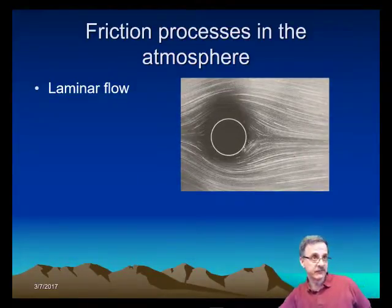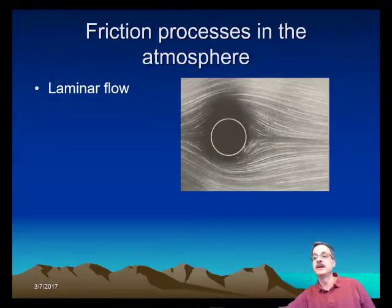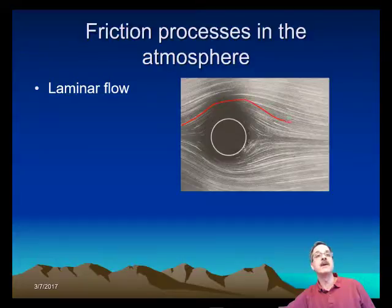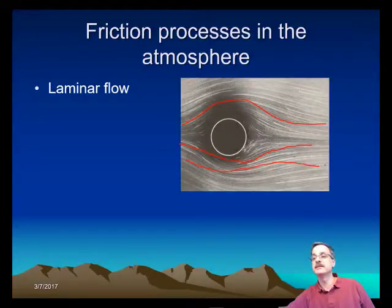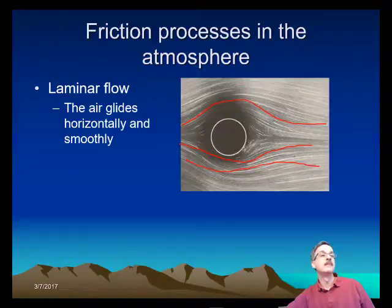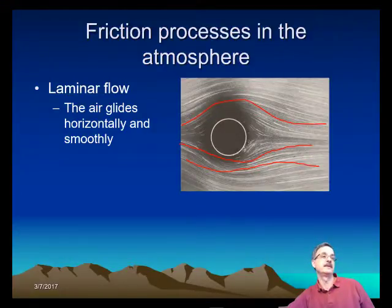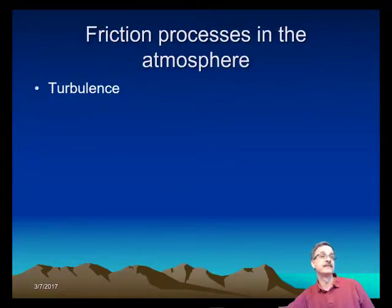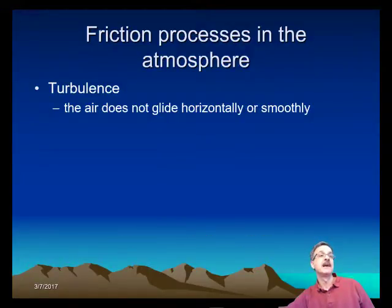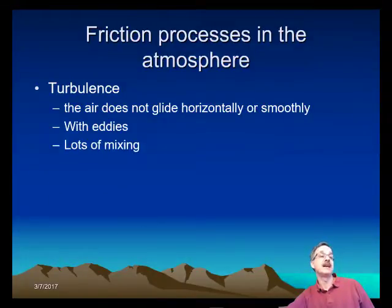There are two types of flow as the air goes through the atmosphere. One of them is called laminar flow, where the flow of air follows nice, fluid streamlines. The air glides horizontally and smoothly around any barrier — there are no eddies and no mixing. The other type is turbulent flow, where the air does not glide horizontally and smoothly — we have eddies and lots of mixing.